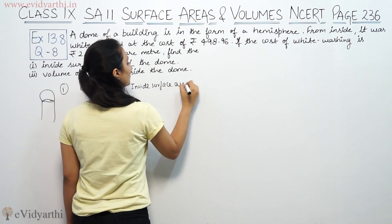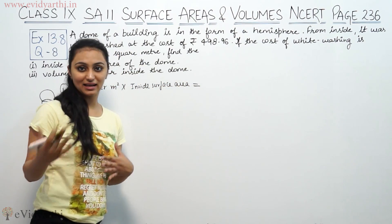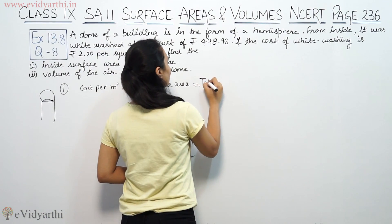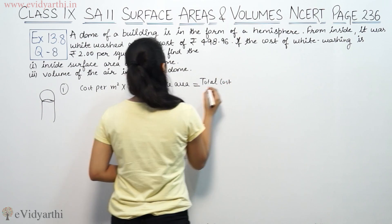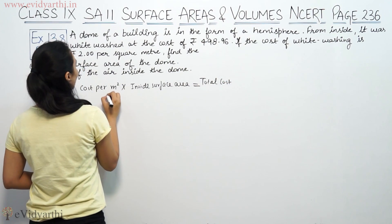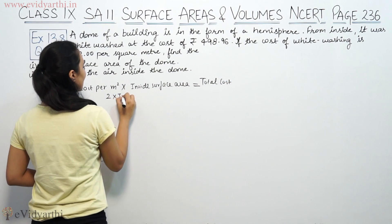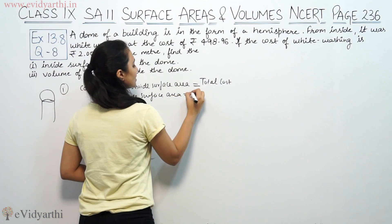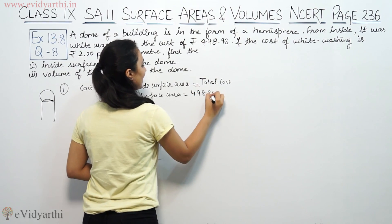Inside surface area of the dome multiplied by cost per meter square, which is 2 rupees. Total cost is 498.96.